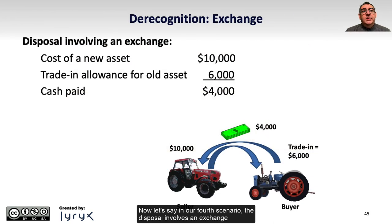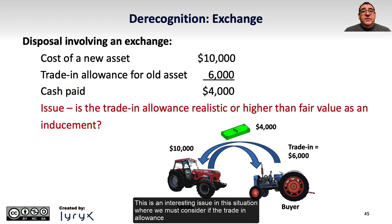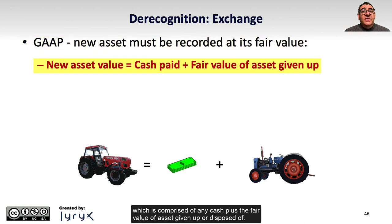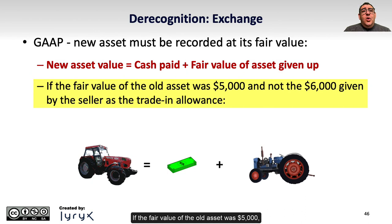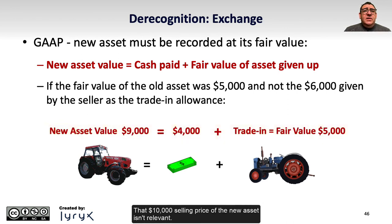Now let's say in our fourth scenario, the disposal involves an exchange where the company acquires a new asset with a cost of $10,000, and the old asset has a trade-in allowance of $6,000, with the remainder of $4,000 being paid by the company in cash. We must consider if the trade-in allowance is realistic or higher than the fair value, which acts as an inducement to make the trade. Under IFRS and ASPE, the new asset must be recorded at its fair value, comprised of any cash plus the fair value of any asset given up. If the fair value of the old asset was $5,000 and not the $6,000 trade-in allowance, then the new asset must be recorded at $9,000, comprised of $4,000 cash plus the $5,000 fair value of the old asset. That $10,000 selling price of the new asset isn't relevant.